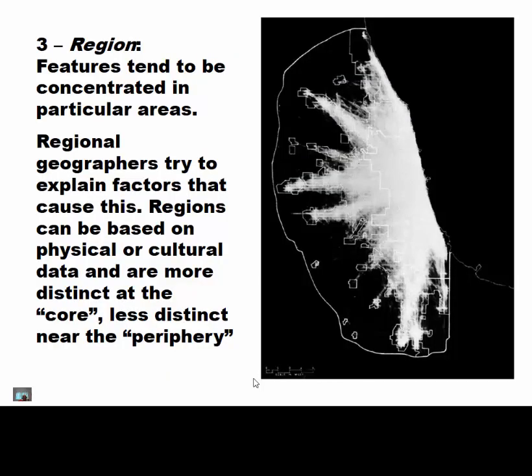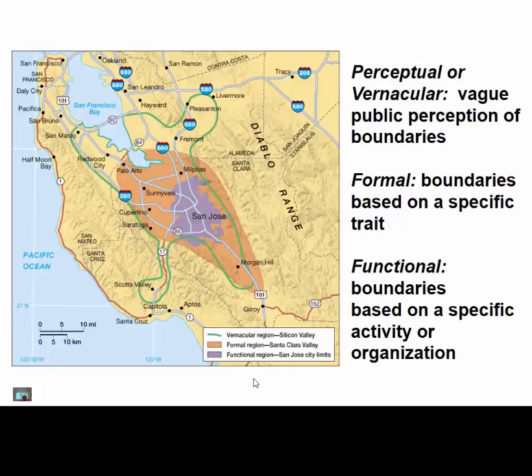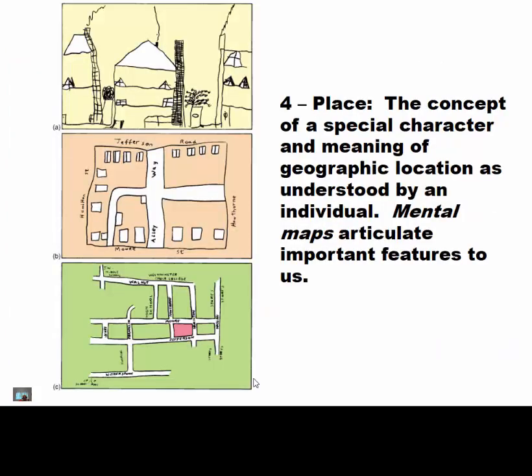Region is another theme. Features tend to be concentrated in particular areas — we can see great examples in Washington, D.C. We can see perceptual regions, which are what we call vernacular or vague perceptions, like Appalachia. Where does Appalachia begin? There are also formal regions based on specific criteria, and functional regions.